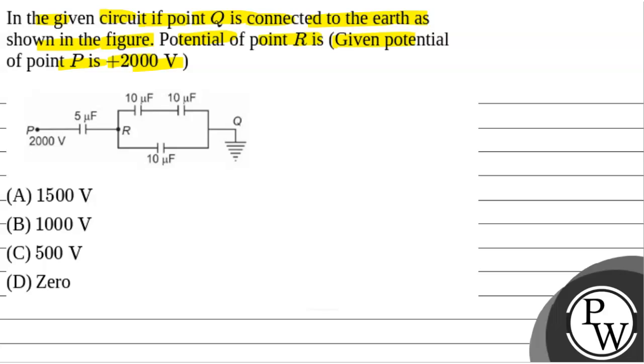So we will solve this question. First of all, we will see what will be the key concept used. The key concept will be: in series combination, equivalent capacitance C equivalent is denoted as Cs and is given by C1 into C2 by C1 plus C2.